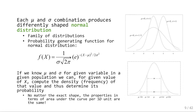In this class, we're not going to be doing that manually — we're going to use computers and a table that tells us about probabilities. With the mean and standard deviation known for a given variable in a given population, we can, for any given value of x, compute the density or frequency of that value and determine its probability. The properties in terms of area under the curve per standard deviation unit are the same regardless of the exact shape.